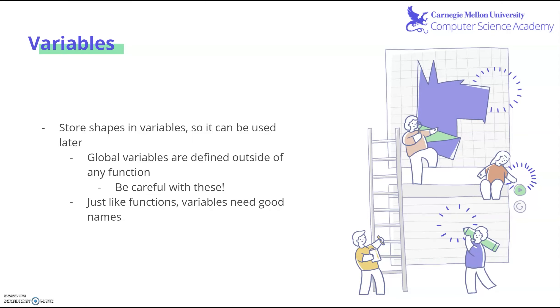In math, variables can be used to represent unknown or known values. And the same can be said about variables in programming. They are meant to store shapes such that they can be called upon later. So instead of having to constantly redefine a shape you want to draw, you can store it once and call it later on.